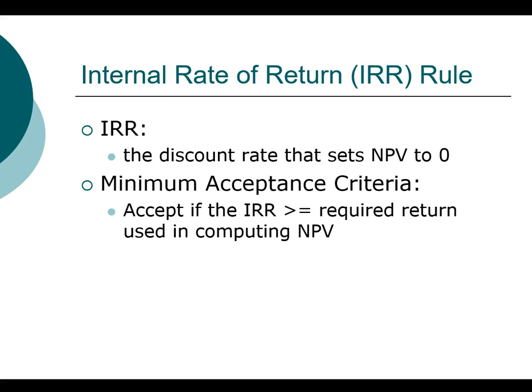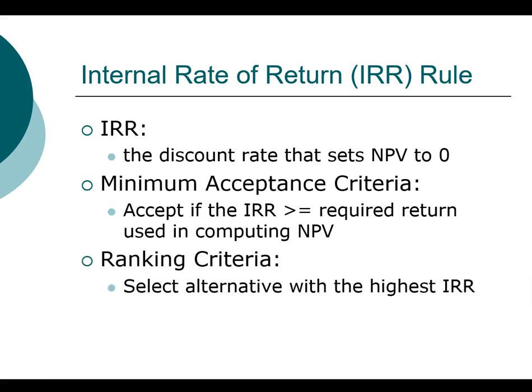More importantly, if you have projects that are not independent but rather mutually exclusive, then you need to rank the projects. If you are using the internal rate of return method, your ranking criteria will be to select the project with the highest internal rate of return. And this is where oftentimes this method comes into trouble. But before we get into that, we want to first take a look at how we use this method to evaluate projects.